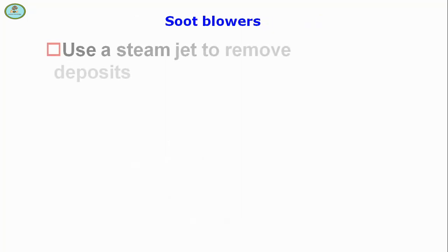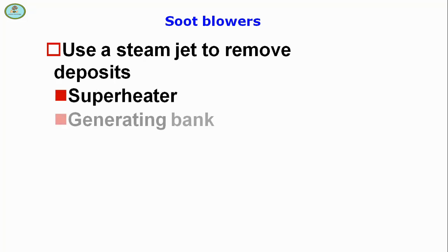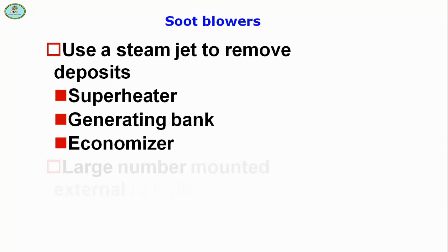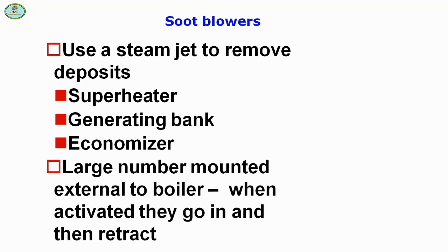Soot blowers use a steam jet to remove deposits from the superheaters, generating bank, and economizer. A large number are mounted externally to the boiler; when activated they extend in and then retract.